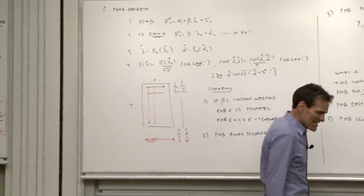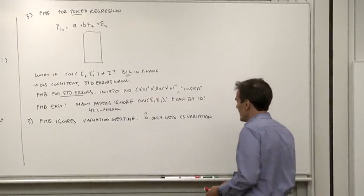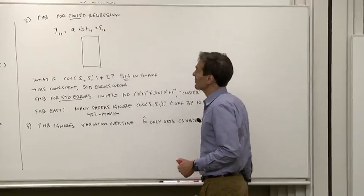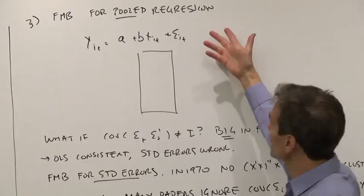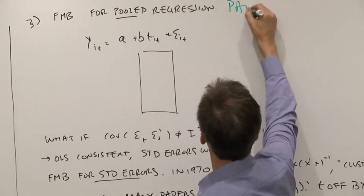Think a little more about Fama-Macbeth and why it's so famous and why it's lasted so long. It's a technique that's quite useful not only for asset pricing but for pooled regressions in general. So a pooled regression or a panel, pooled regression is one version of a panel regression.